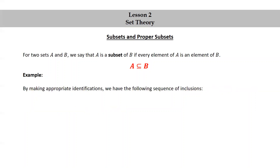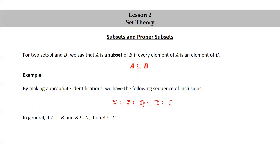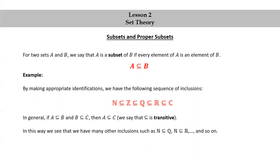Another example. By making appropriate identifications, we have the following sequence of inclusions. The set of natural numbers is a subset of the set of integers, which is a subset of the set of rational numbers, which is a subset of the set of real numbers, which is a subset of the set of complex numbers. In general, if A is a subset of B and B is a subset of C, then A is a subset of C. We say that the subset relation is transitive. In this way, we see that we have many other inclusions, such as the set of natural numbers is a subset of the set of rational numbers, the set of natural numbers is a subset of the set of real numbers, and so on.